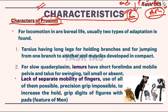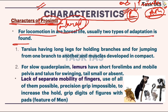Here you can write down differences: prosimians versus anthropoids and their characteristics. Firstly, characteristics of prosimians — for locomotion, especially because they are mostly arboreal, they are tree-living. Prosimians have two types of adaptation for arboreal life. Firstly, tarsiers have long legs for holding branches — long legs for jumping from one branch to another.